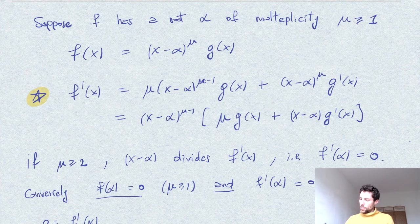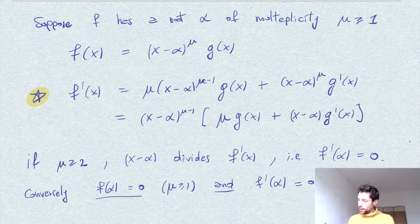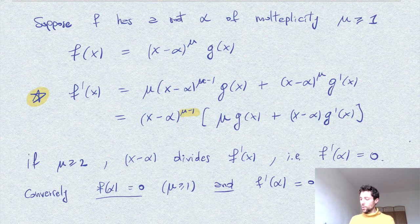So, in other words, let me just say it very clearly here, mu cannot be just one, right? Because if mu was one,